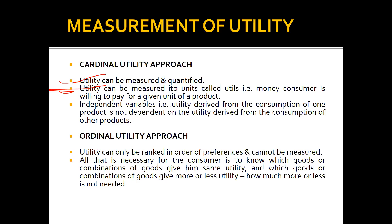In the cardinal utility approach, utility can be measured and quantified into units called utils — measured by the money a consumer is willing to pay for a given unit of a product. Also, utility derived from the consumption of one product is independent of the utility derived from the consumption of other products. In the ordinal approach, utility can only be ranked as preferences — first, second, third — and cannot be measured in terms of utils. All that is necessary is for the consumer to know which goods give him the same, more, or less utility; how much more or less is not needed.